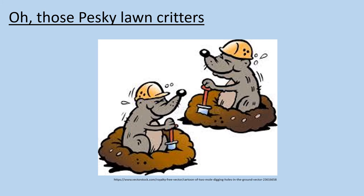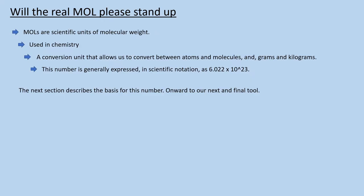Well, no, those are the wrong kind of mole. What we need is the chemistry kind of mole. A mole, M-O-L or M-O-L-E, is a unit of amount in chemistry. It's a conversion number that allows a chemist to move between the microscopic worlds of atoms and molecules to the macroscopic world of grams and kilograms. This number is generally expressed as 6.022 times 10 to the 23rd. We'll see in the next section what the basis of this number is.